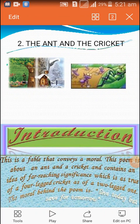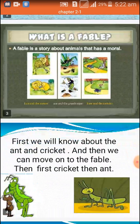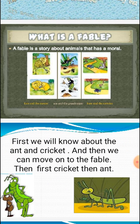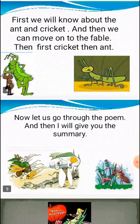Hi students, today we are going to see a poem. Its name is 'The Ant and the Cricket.' This is a fable. A fable is a story, often with animals as characters, that conveys a moral. In a fable, animals are given human-like characters. In this story, they are able to speak, and with the help of this speaking quality, they convey moral values to people.